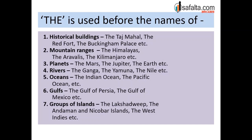Friends, aap ne ek baat notice kari — kahi kahi mein 'the' ko 'thuh' pronounce kar rahi hoon, kahi kahi 'dhee'. Jab kisi word se pehle 'the' aata hai aur woh word kisi consonant sound se shuru ho raha hai — jaise ki Jupiter, 'J' is a consonant — toh aap 'thuh' bolenge. Lekin agar vowel sound se shuru hone wala word ho — jaise the Earth, the Indian Ocean, the Aravalis — toh pronunciation 'dhee' ho jayegi. Yeh bahut asaan sa difference hai, keep this in mind.